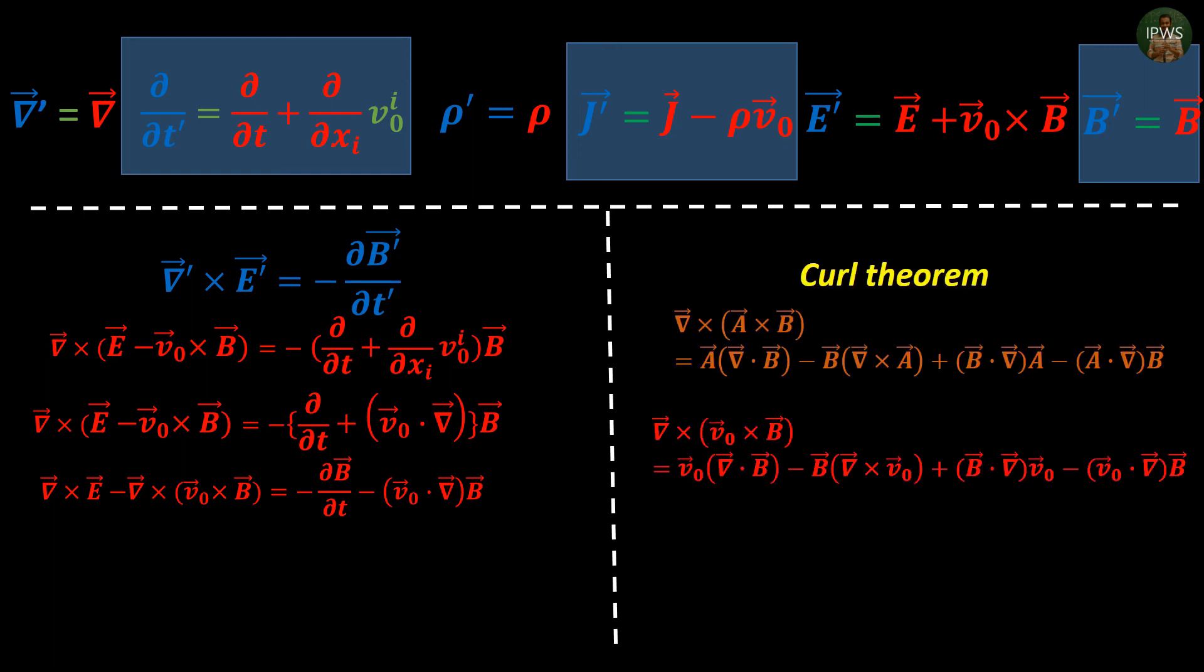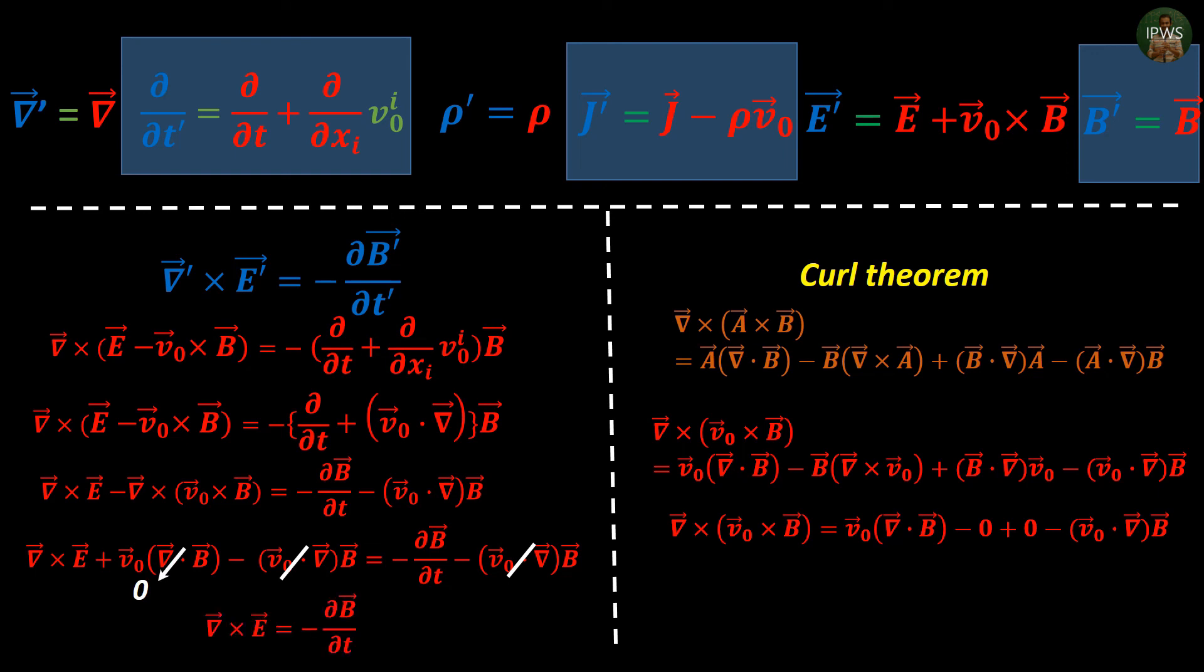Replace a vector with v0 and now we have two terms, none of them involving any cross product. Substitute this form into original equation. Eliminate same terms from both sides. Use the fact that divergence of B is zero and surprisingly this equation remains exactly the same.